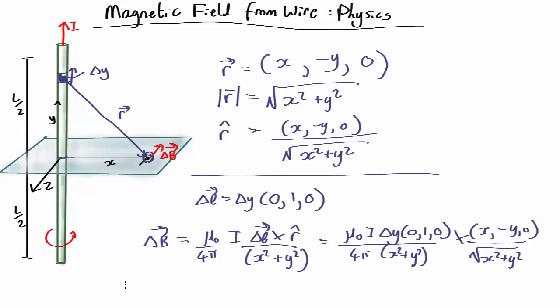Now if you evaluate the cross product, so if we have (0, 1, 0) cross (x, minus y, 0), if you look up the cross product equation, you'll find that comes out to be (0, 0, minus x).